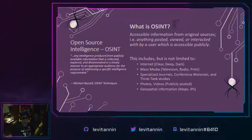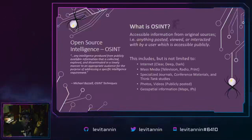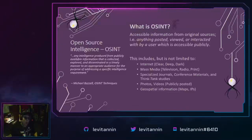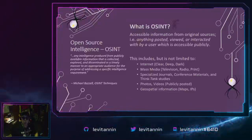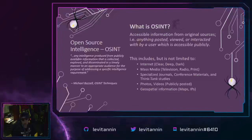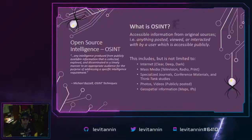OSINT sources also include mass media — television, radio, books, journals, print of all kinds — video games, specialized journals, conference materials, and think tank studies. People are talking about them all the time; we're going to be posting about DEF CON for months after this. There are also photos and videos posted publicly online. Finally, another area is geospatial information such as where someone is physically located, their GPS, where on a map they may be, or even their IP addresses.